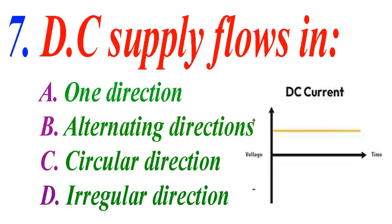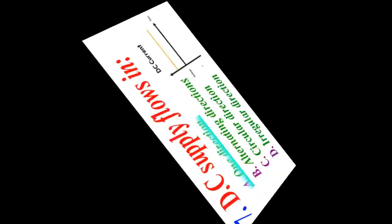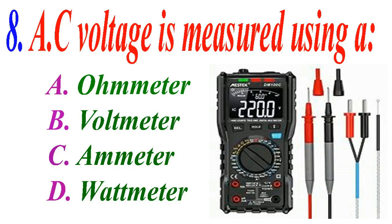DC current flows in: A one direction, B alternating direction, C circular direction, D irregular direction. The correct answer is A, one direction.